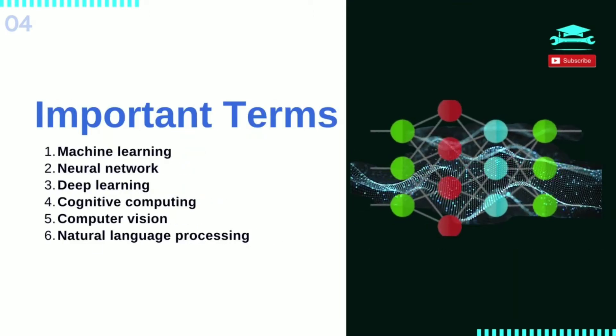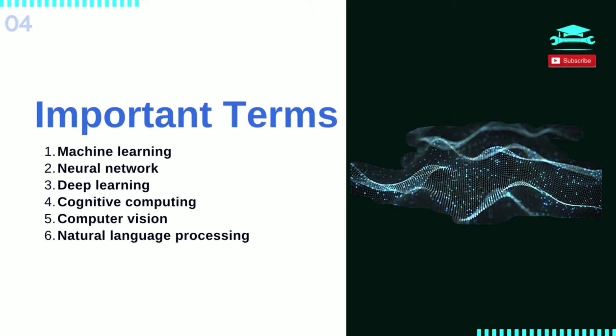A neural network is a type of machine learning made up of interconnected units, like neurons, that processes information by responding to external inputs and relaying information between each unit. The process requires multiple passes at the data to find connections and derive meaning from undefined data.